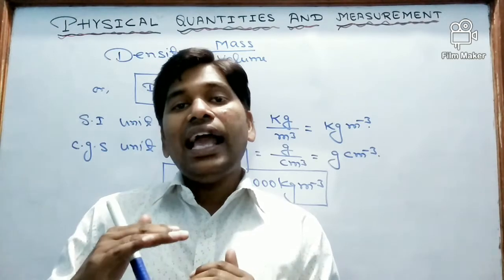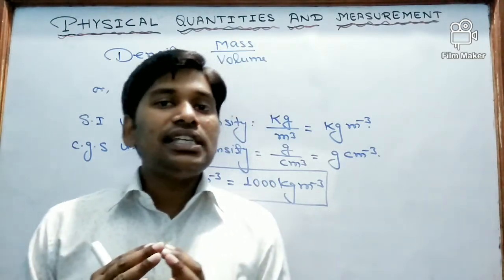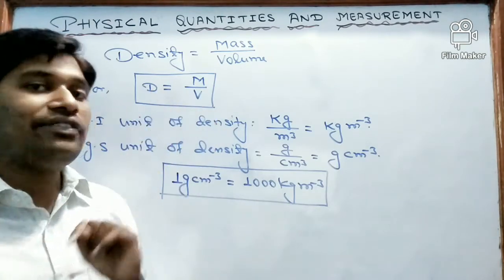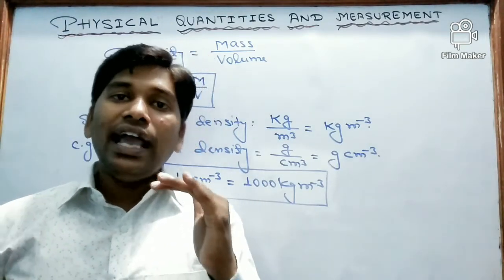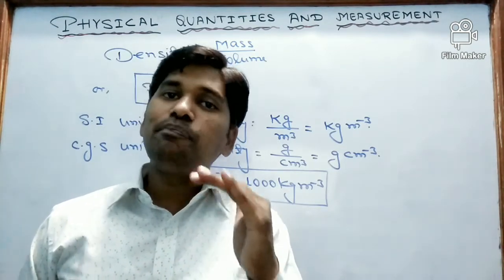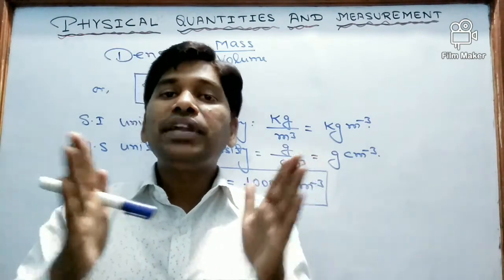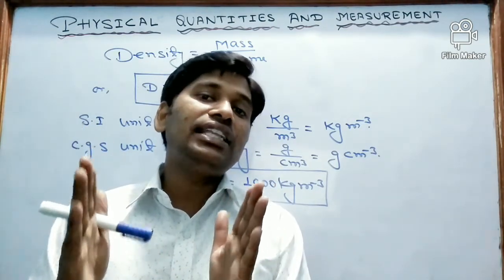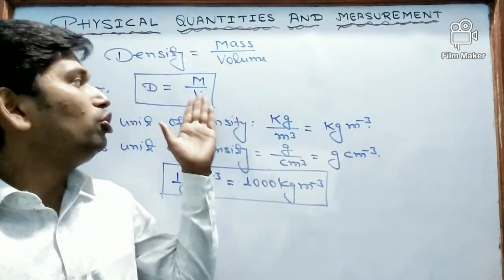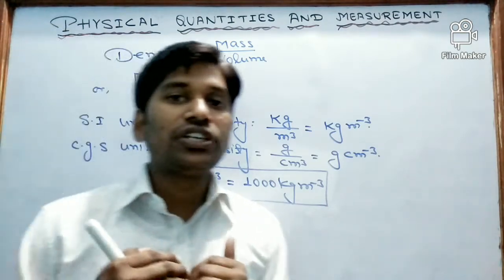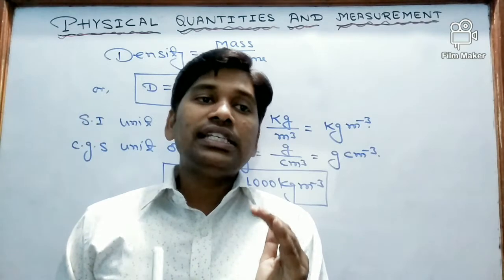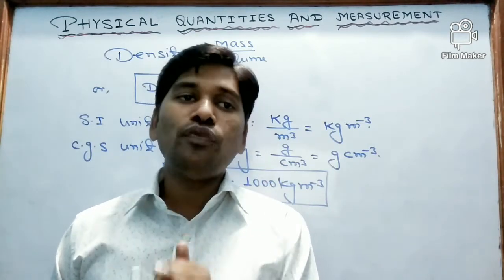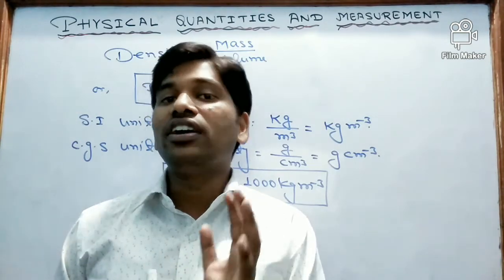Let us see how. As the temperature increases, the substance expands. As the substance expands, its volume will increase and density will decrease. As for the second factor, pressure — as the pressure increases, it compresses substances like gases. Gases can be easily compressed by increasing the pressure. So as it is compressed, its volume will decrease and density will change. So temperature and pressure are the two factors to be specified to measure the density of a substance.